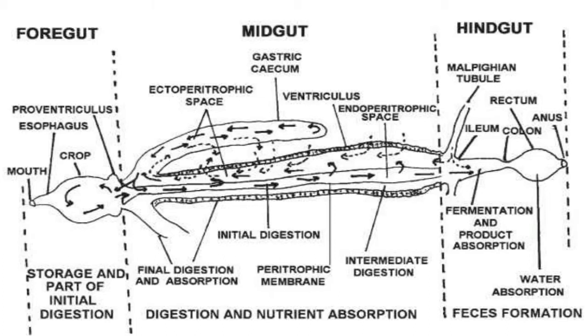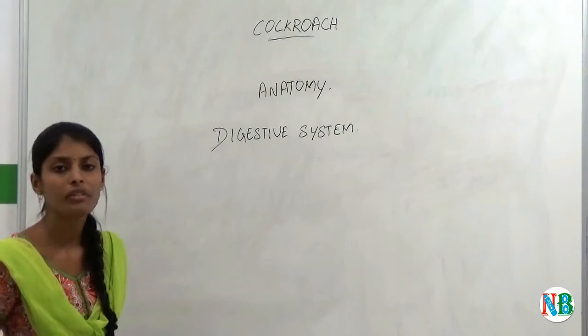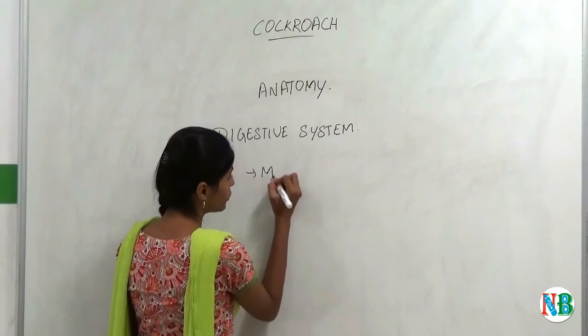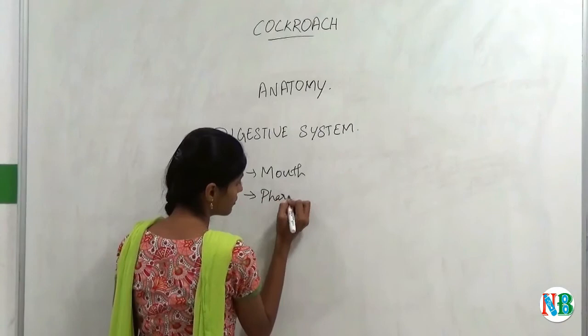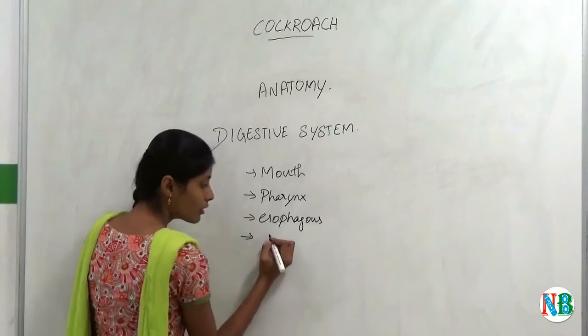Now we will see the parts of the digestive system. Cockroach's digestive system is divided into Foregut, Midgut and Hindgut. Now we will see the Foregut. The parts of Foregut are Mouth, Pharynx, Esophagus, Crop, and finally Gizzard.